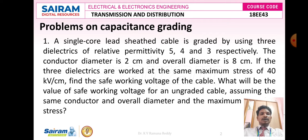Let us go through problem number 1. A single core lead sheathed cable is graded by using 3 dielectrics of relative permittivity 5, 4, and 3 respectively. The conductor diameter is 2 cm and overall diameter is 8 cm. If the 3 dielectrics are worked at the same maximum stress of 40 kV per cm, find the safe working voltage of the cable. What will be the value of safe working voltage for an ungraded cable, assuming the same conductor and overall diameter and maximum stress?